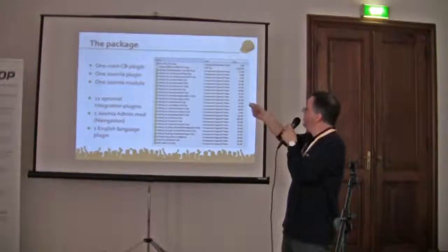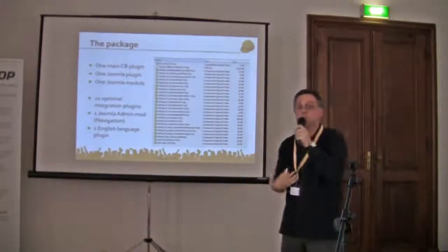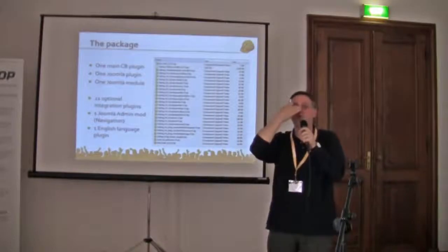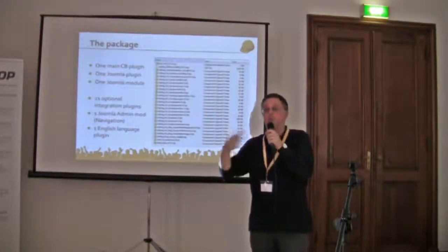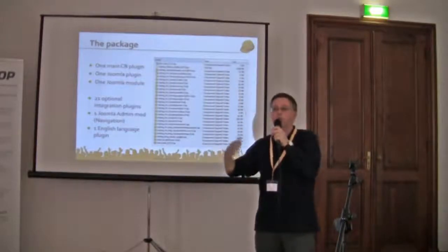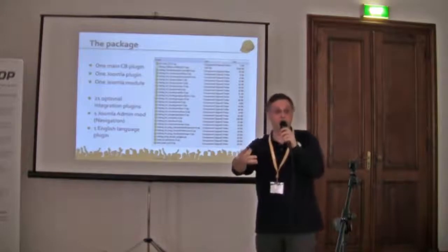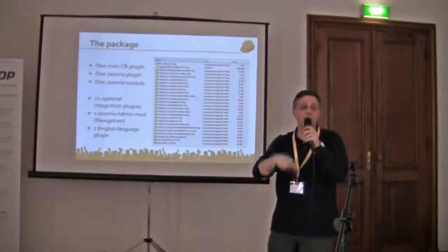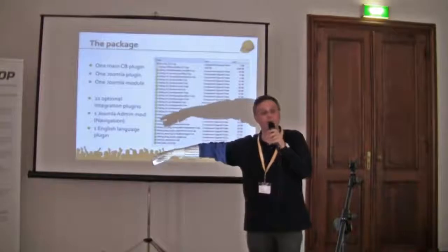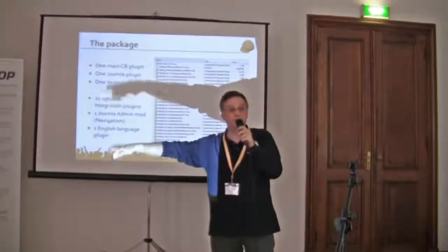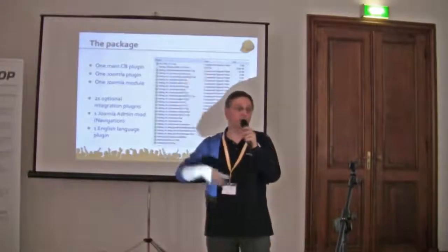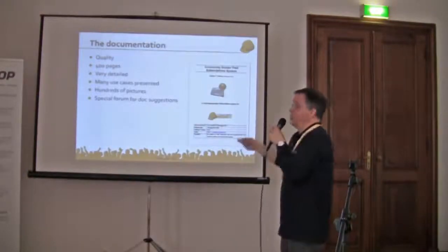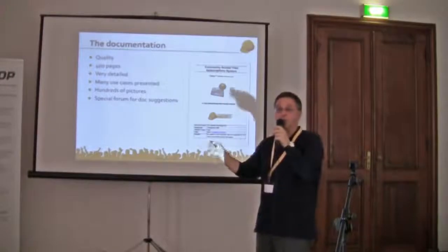The package is quite extensive with many plugins — you install what you need when you need it. There's one main Community Builder plugin which is the main CB Subs plugin, a Joomla bot plugin, and a Joomla module. The Joomla plugin basically helps intercept the ACL control — anytime an object is rendered for a user, the plugin checks if that user is authorized to see this content. If not, it either sends them to the CB Subs membership subscription page to become a subscriber, or simply doesn't show the content at all, depending on the content element.